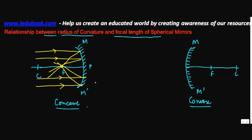So this is the focus point. Similarly in the case of a convex mirror, again this was your point P.